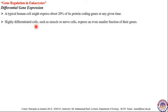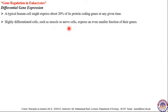Highly differentiated cells such as muscle or nerve cells express an even smaller fraction of their genes. Muscle cells and nerve cells are specialized cells designated to perform specific functions, and their structure is suited to those functions. Both muscle and nerve cells in an individual have the same genome, but because different genes are on in those two cells, they have characteristic structure and function.